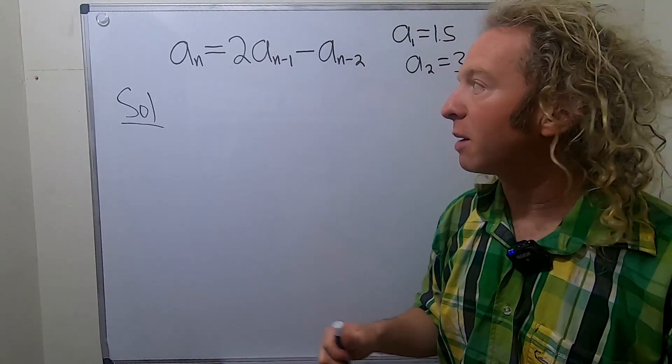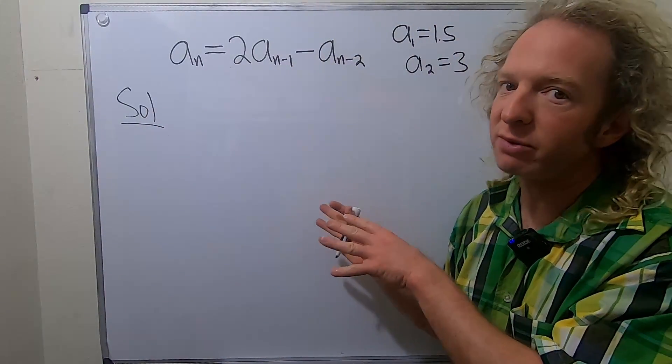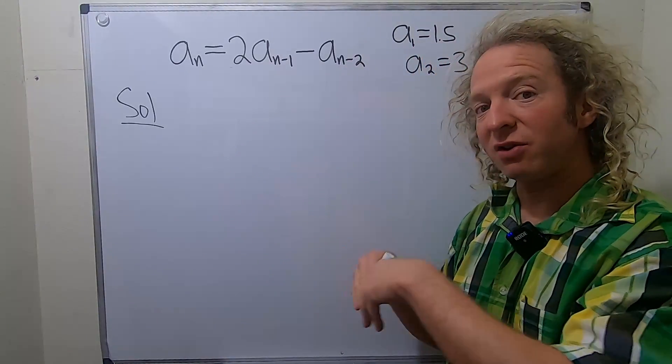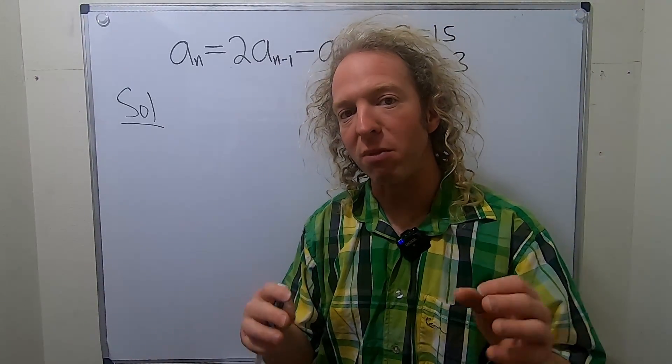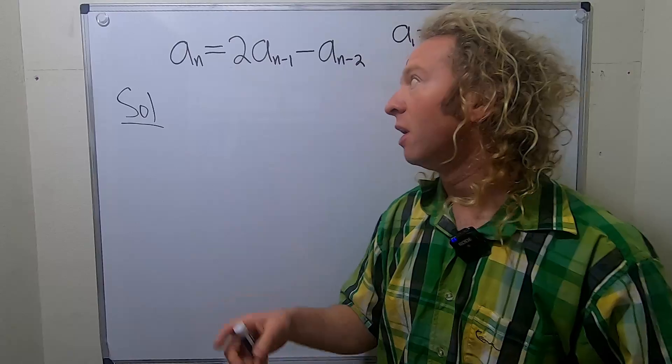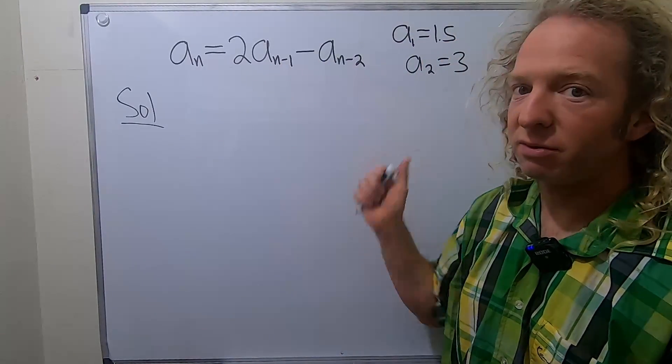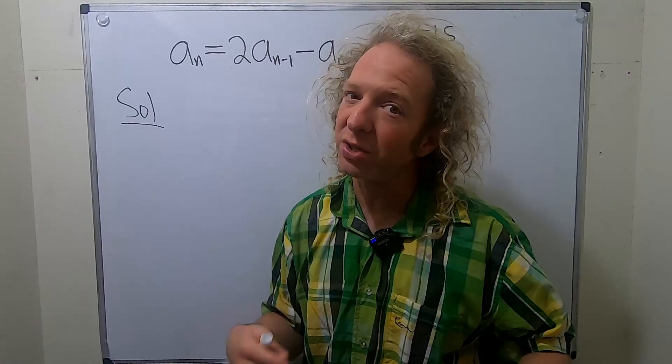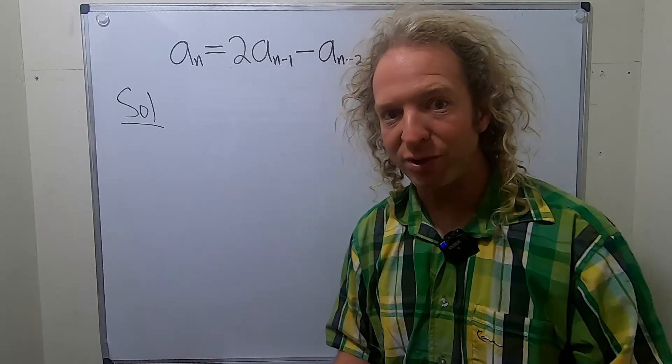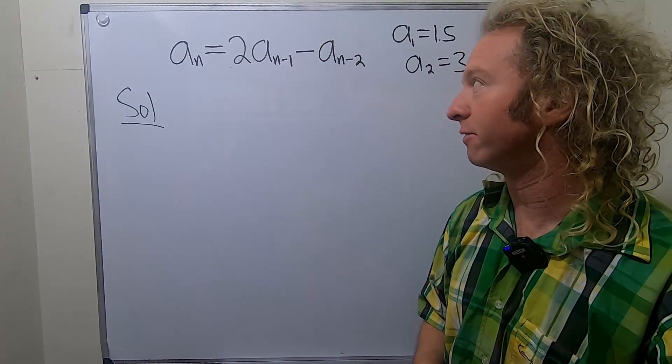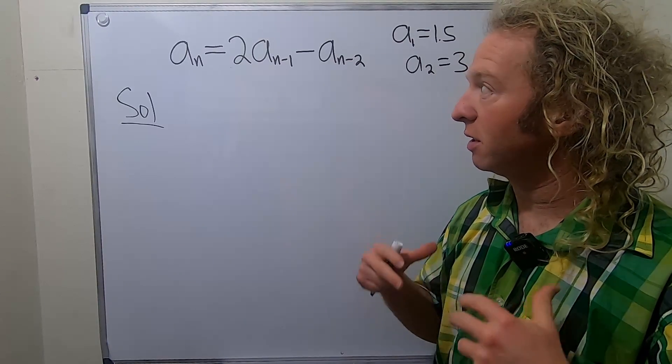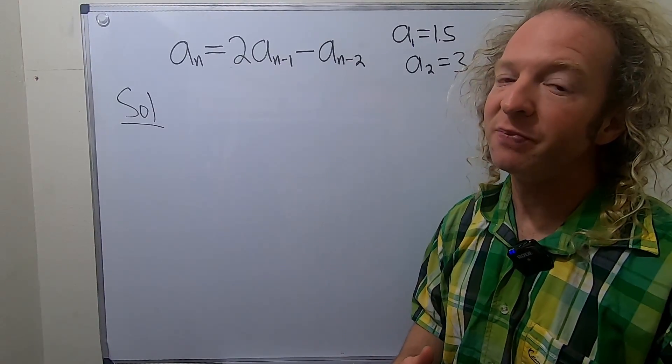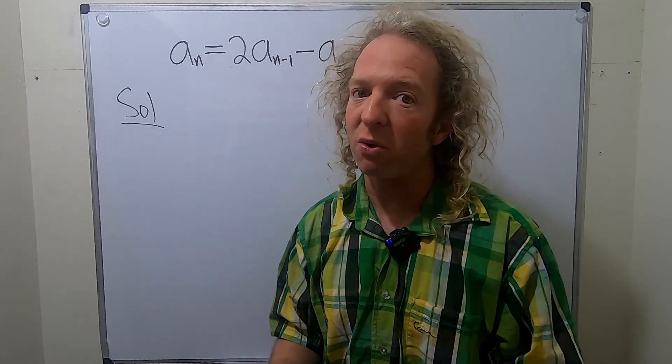If you're wondering where this comes from, oftentimes these arise via counting problems. So you can model a counting problem via this equation called a recurrence relation. Then when you solve the recurrence relation, you're actually solving the counting problem. So it's kind of cool. Okay, so the first step in this method that we're going to use is to find what's called the characteristic equation.